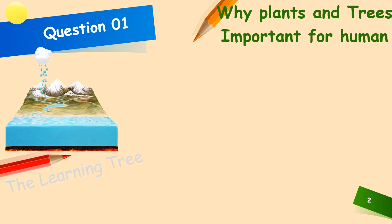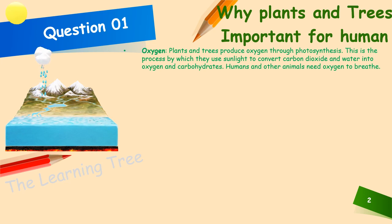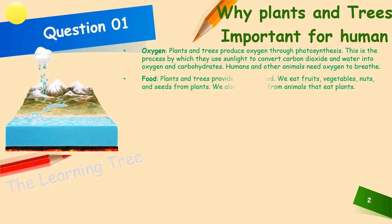Why are plants and trees important for humans? Oxygen: plants and trees produce oxygen through photosynthesis. This is the process by which they use sunlight to convert carbon dioxide and water into oxygen and carbohydrates. Humans and other animals need oxygen to breathe.